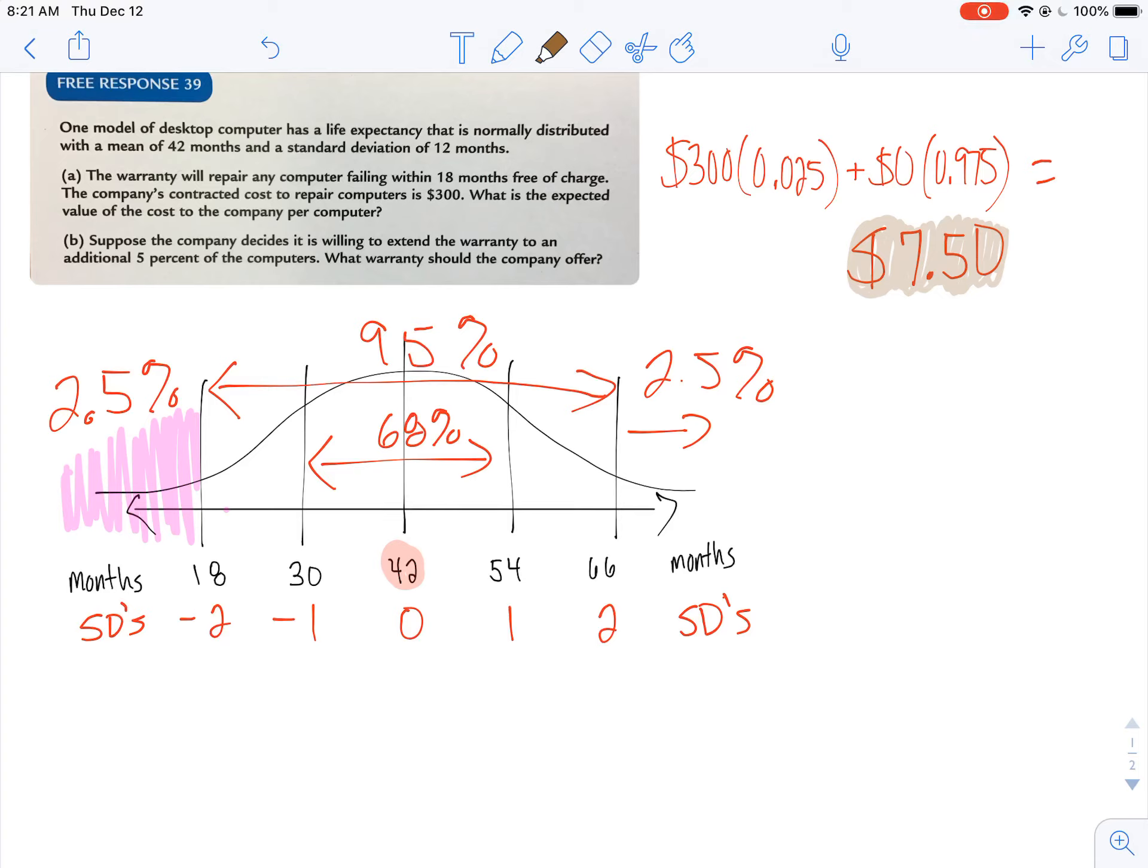All right. Now, for part B, it says suppose the company is willing to extend warranty to an additional 5% of computers. What warranty should they offer?